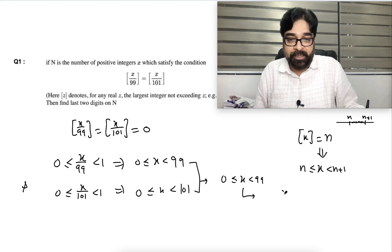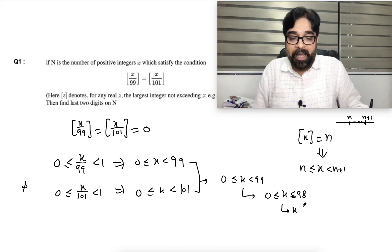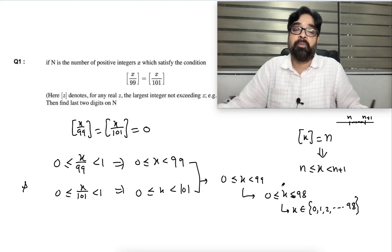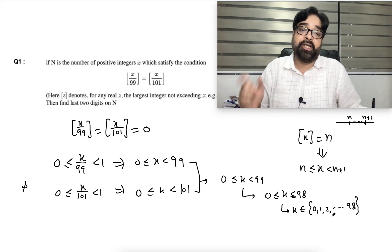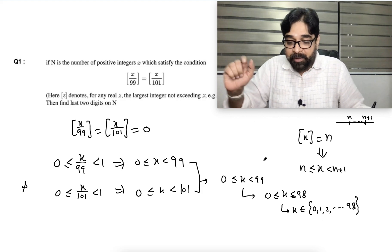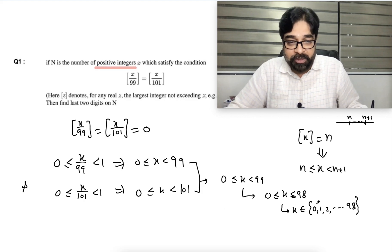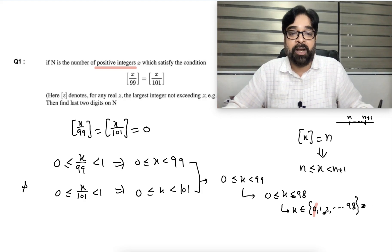Since x must be an integer, x can be 0, 1, 2, ... up to 98. But they asked for positive integers, so we exclude 0. The number of elements from 1 to 98 is 98. So the zero case gives us 98 values.